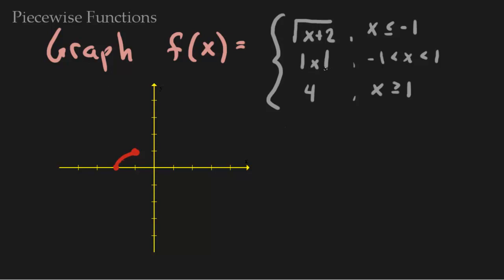The absolute value of x looks like a V. Starting at negative 1 — I don't get to include it, but I can use it as a reference point. Plugging in negative 1 gives 1, putting me right here. But notice that dot is already filled by the other graph, so I'll fix that. The V goes down to 0 at the origin then back up. When x equals 1 we don't get to include it either, so we put another open dot there.